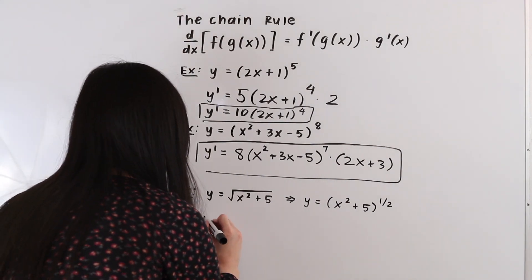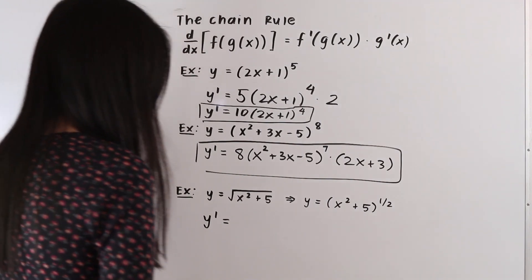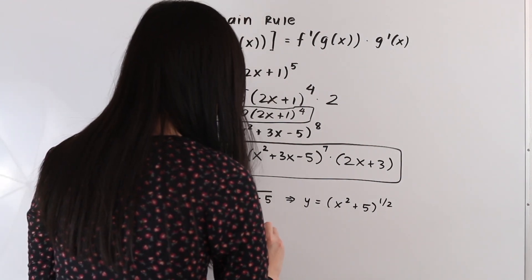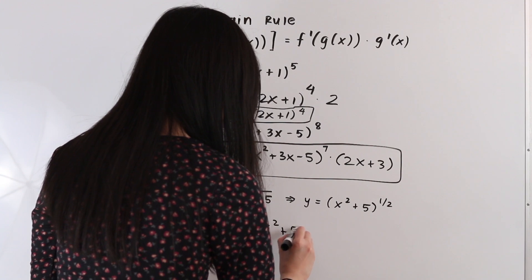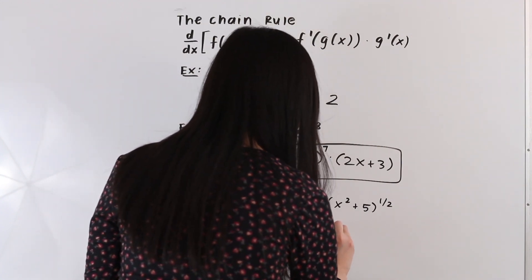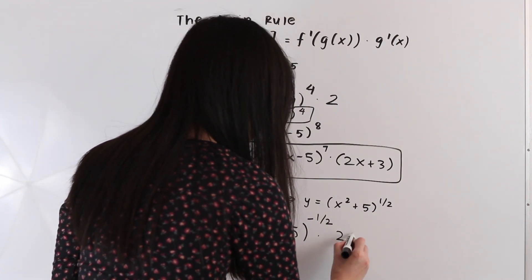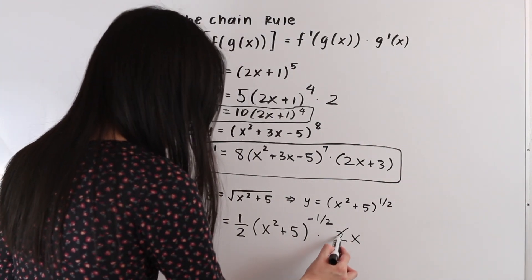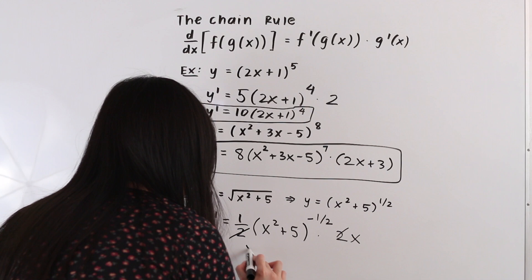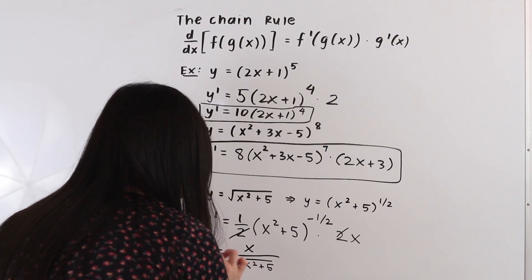Let's find the derivative. y prime equals the derivative of the outer function — the 1 half power — using the power rule: bring down the 1 half, keep everything inside the same as x squared plus 5, subtract 1 from the exponent so 1 half minus 1 gives negative 1 half, then multiply by the derivative of the inner function. The derivative of x squared plus 5 is 2x. The 2 in the numerator cancels the 2 in the denominator, and we end up with y prime is equal to x over the square root of x squared plus 5. This is our final answer.